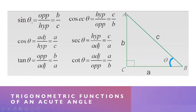The sine of theta is equal to opposite over hypotenuse. The cosine of theta is equal to adjacent over hypotenuse. The tangent of theta is equal to opposite over adjacent. The cosecant of theta is equal to hypotenuse over opposite. The secant of theta is equal to hypotenuse over adjacent. And the cotangent of theta is equal to adjacent over opposite.